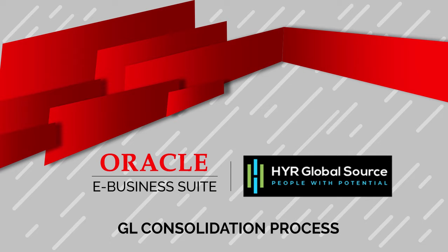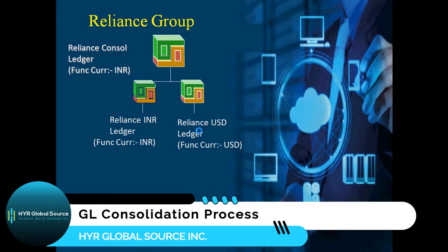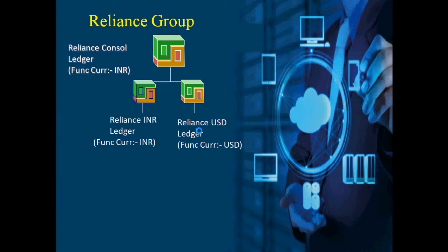Hello friends, in this video I will show you how Oracle GL consolidation process works. I have taken a scenario of a company called Reliance. Under Reliance we have two subsidiary ledgers: Reliance INR ledger where functional currency is INR, and Reliance USD ledger where the functional currency is USD. The requirement is to consolidate the data from both ledgers into another ledger called Reliance Consolidated Ledger, where the functional currency is INR.